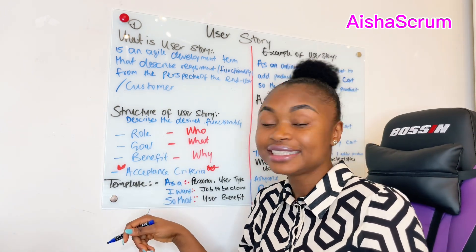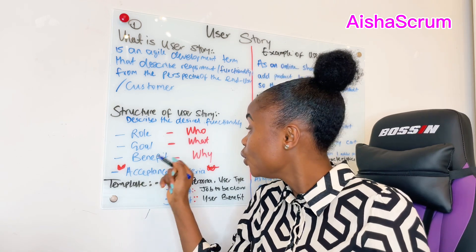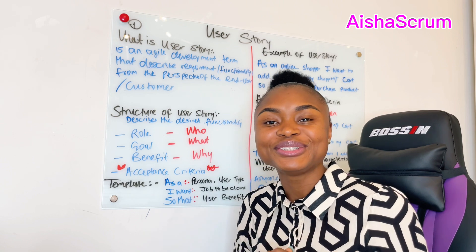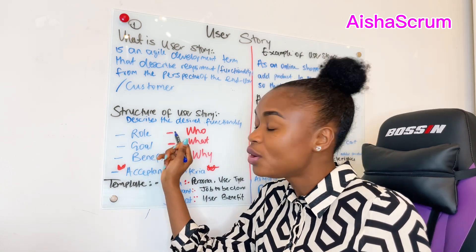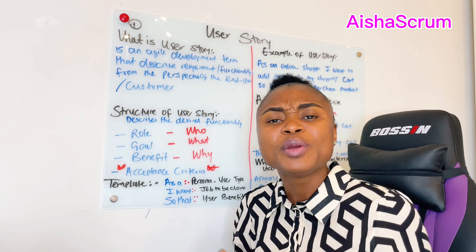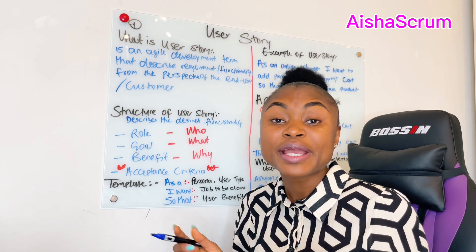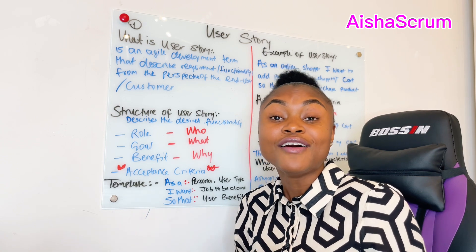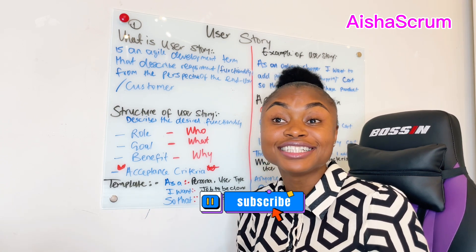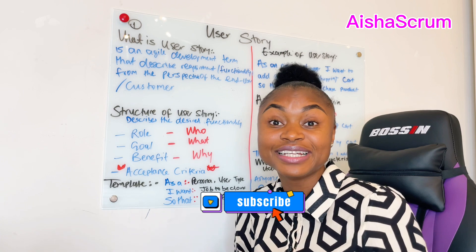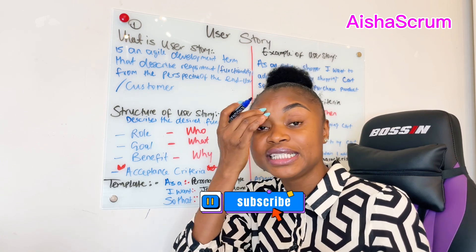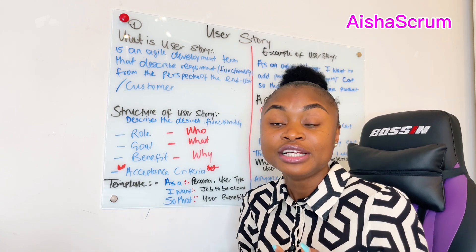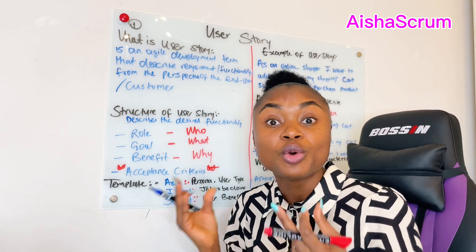This template consists of role, goal, and benefits, and must also have an acceptance criteria. The role basically asks: who are we building this for? This role can be anyone — an online shopper, a business owner, a scrum master, a YouTuber, literally anyone. Any persona that needs this new functionality or desires something. The role is also referred to as the 'who.'